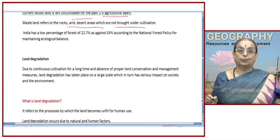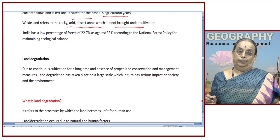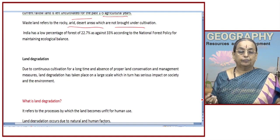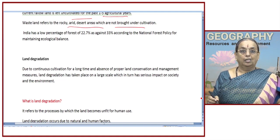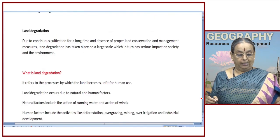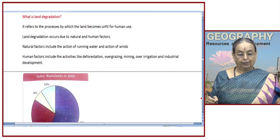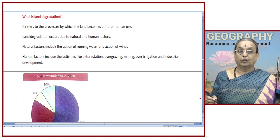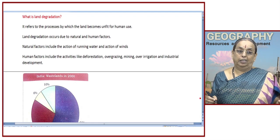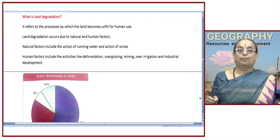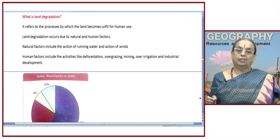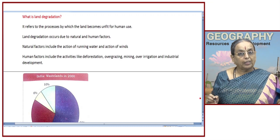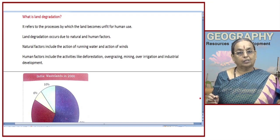Land degradation refers to the process by which we make the land unfit for various purposes or for human use. Through our human activities we are making the land unfit for human use because of over exploitation or because of irrational and defective methods. Let us see what are the factors which contribute to this land degradation.